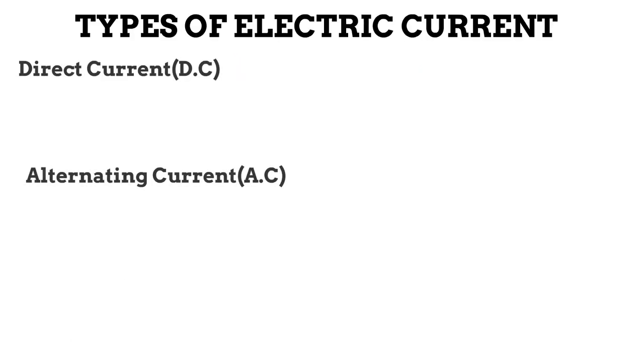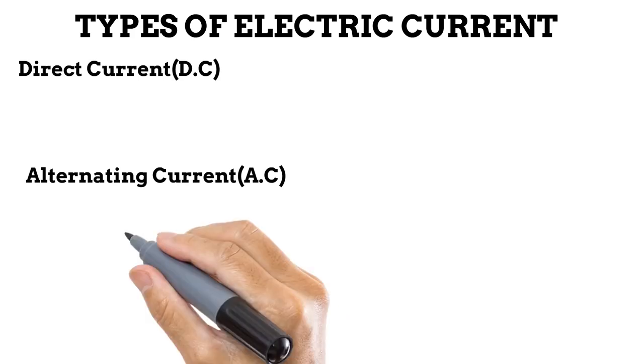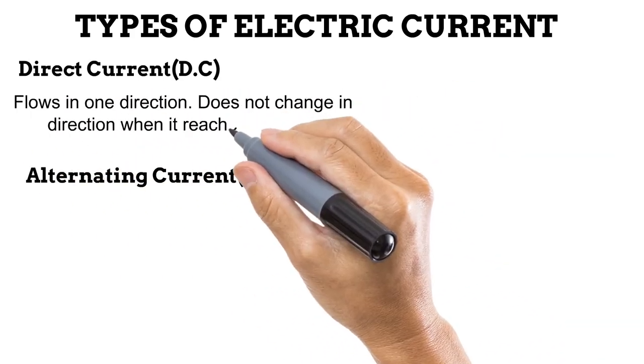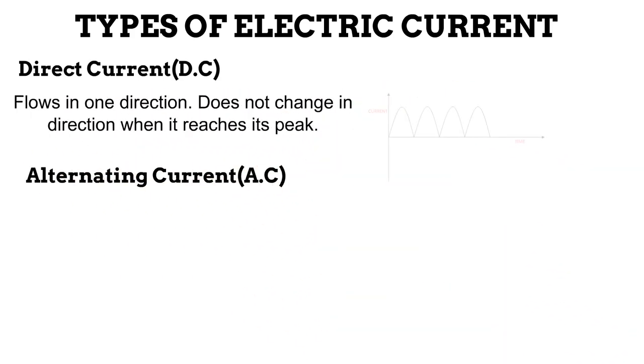Electricity can flow in two forms, as a direct current or as an alternating current. In direct current, electricity flows in just one direction, it is unidirectional. When it reaches its peak, it does not go to the negative direction. You would see that on the diagram the wave representing direct current stays above the line, on the positive side.